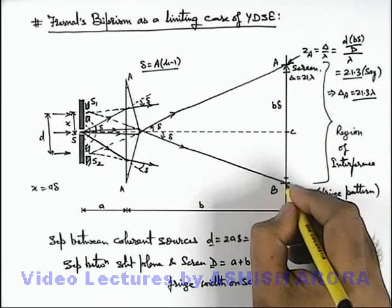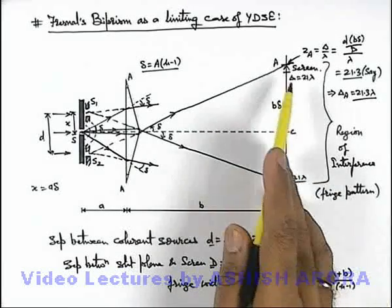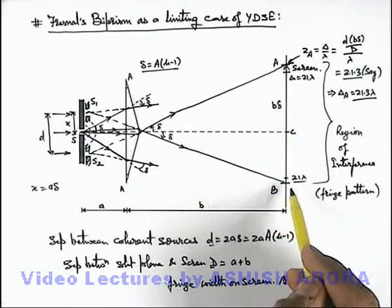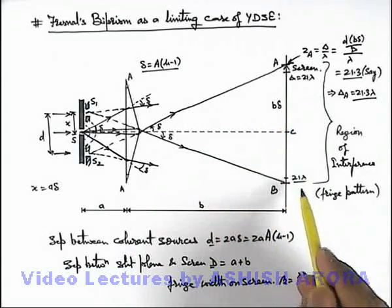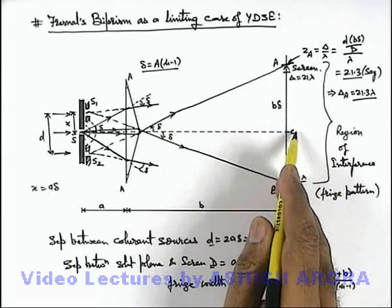Just above point B also, the path difference will be 21λ. So if we calculate the total number of bright fringes on the interference pattern, here we can see 21 fringes are above center, 21 are below center, and 1 is at center.